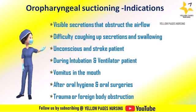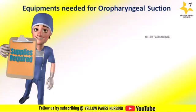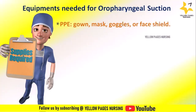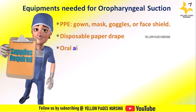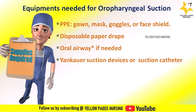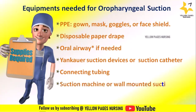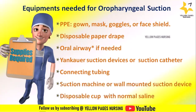Equipments needed for oropharyngeal suction include: personal protective equipment — gown, mask, goggles or face shield depending on the patient's condition; oral airway if needed; a Yankauer suction device or suction catheter; connecting tubing; suction machine or wall-mounted suction device; disposable paper drape; and a disposable cup with normal saline.